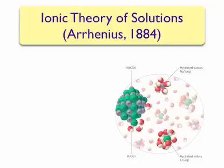One theory that will help us to understand this is the Ionic Theory of Solutions. This theory was proposed by Svante Arrhenius in his PhD thesis, written in 1884. Arrhenius earned the Nobel Prize in Chemistry in 1903 for this and many other contributions to chemistry.